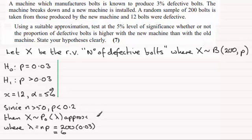200 times 0.03 is 6. So if you just kind of put a border here and down here just to section that off.